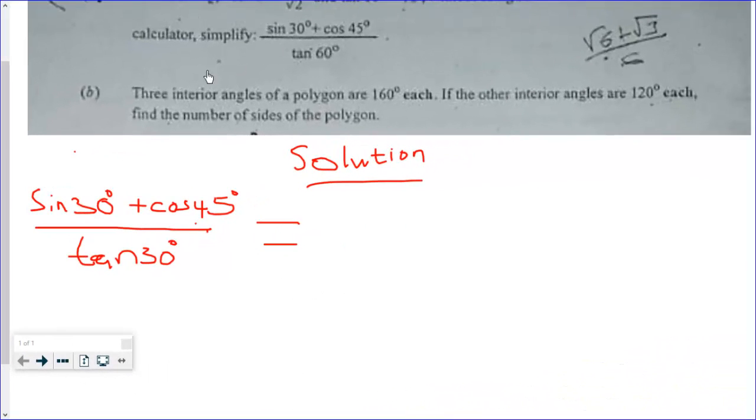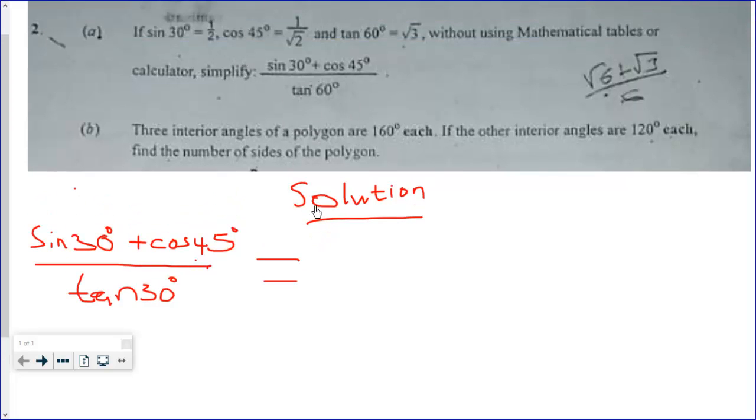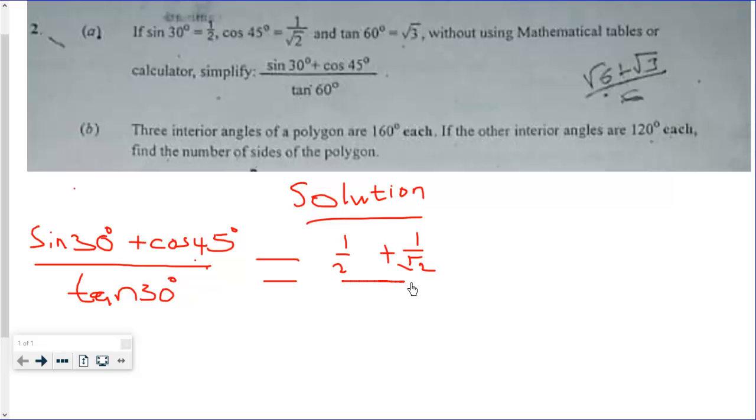Okay, now let's tackle question 2a. We are given sin 30° + cos 45° / tan 60°, and we're supposed to evaluate this expression without using mathematical tables or calculator. So this is going to give us 1/2 plus 1/√2 all over √3.